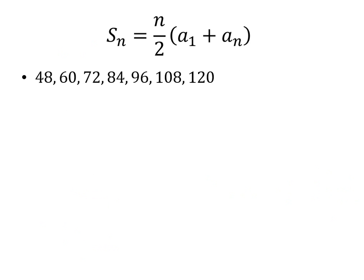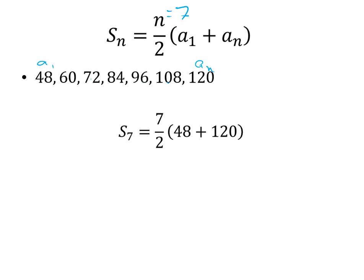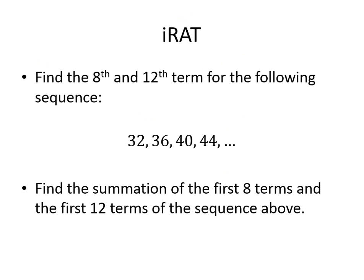Looking at this example with a finite sequence, our a1 is 48 and our an is 120. Counting the numbers — 1, 2, 3, 4, 5, 6, 7 — we have 7 numbers, so n equals 7. Setting it up: S7 equals 7 over 2 times (48 plus 120). Calculate through and we get 588. Adding 12 to each term, it carries over and continues — that's how you find the sum of a finite arithmetic series.